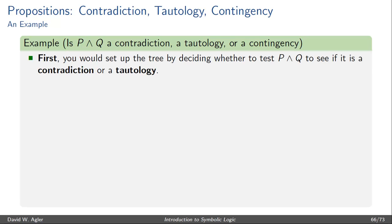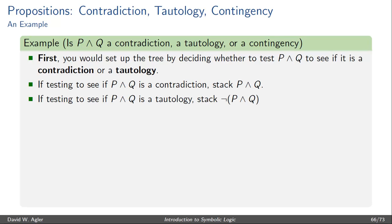The first step is to decide which truth tree test to perform. We could test to see if P ∧ Q is a contradiction or test to see if it's a tautology. If we're testing for a contradiction, we simply stack P ∧ Q. If we're testing for a tautology, we stack the literal negation of P ∧ Q, which is ¬(P ∧ Q).